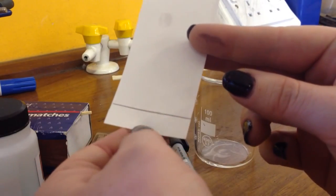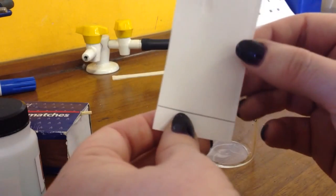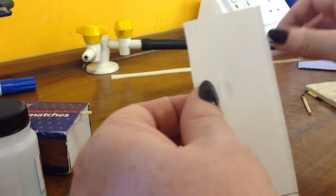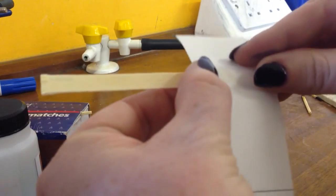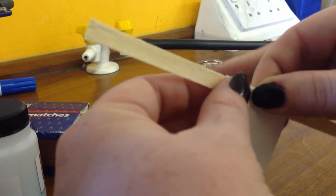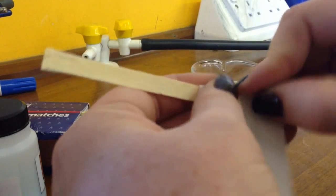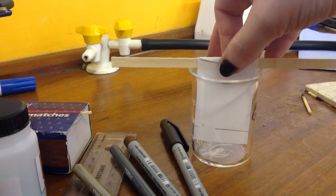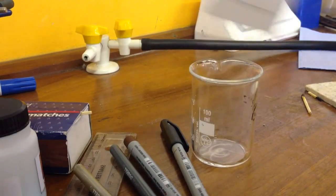You need a bit of filter paper with a pencil line drawn about 2 centimeters from the bottom. Just rest that against the beaker and take a splint and wrap it around the top so that when you pop it back in your beaker, the bottom of the filter paper doesn't quite touch the bottom of the beaker.